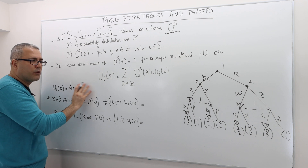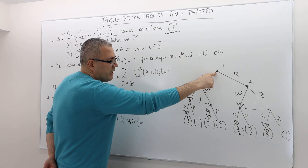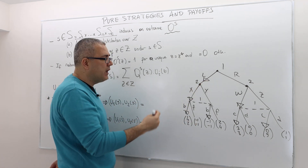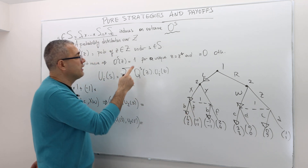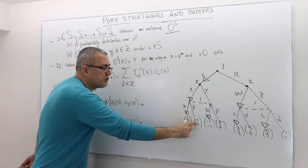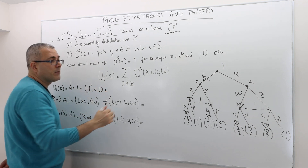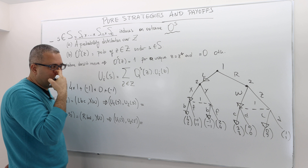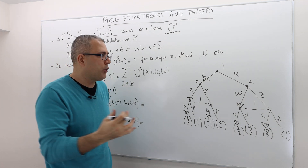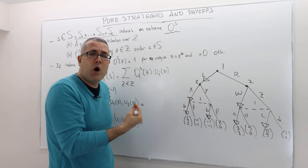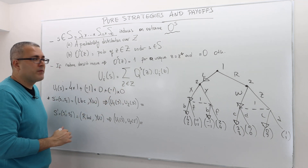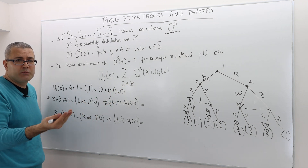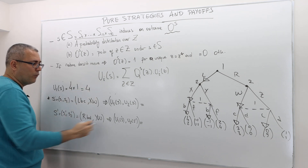For history LXF, player one gets minus one, but the probability is zero because F will never be played by player one according to these strategies. For history LYB, player one gets minus one, but the probability is also zero because player two will never play Y. Given that one history is realized with probability one, all other histories occur with probability zero. So player one's expected payoff is four.